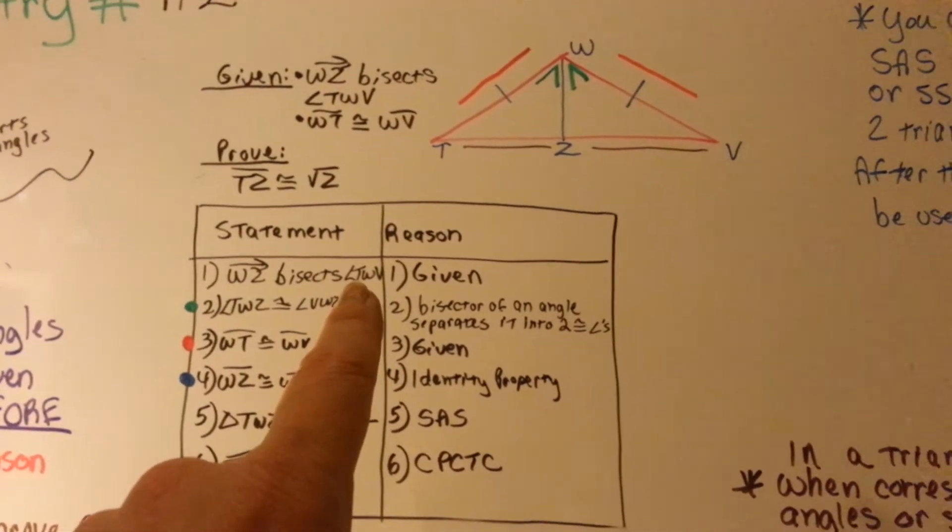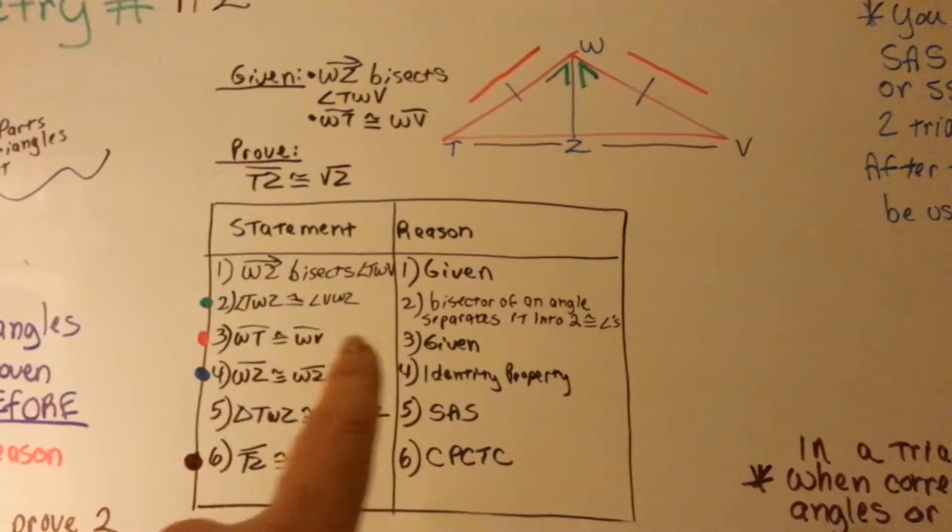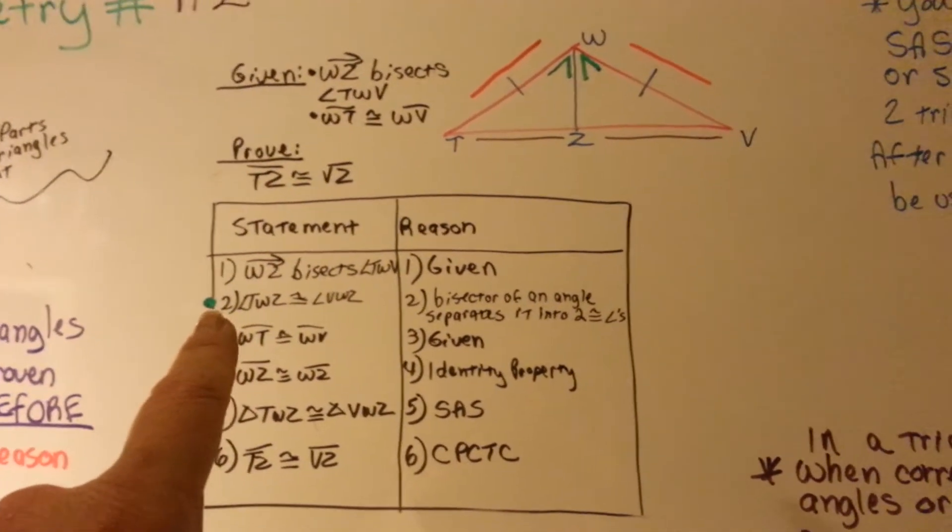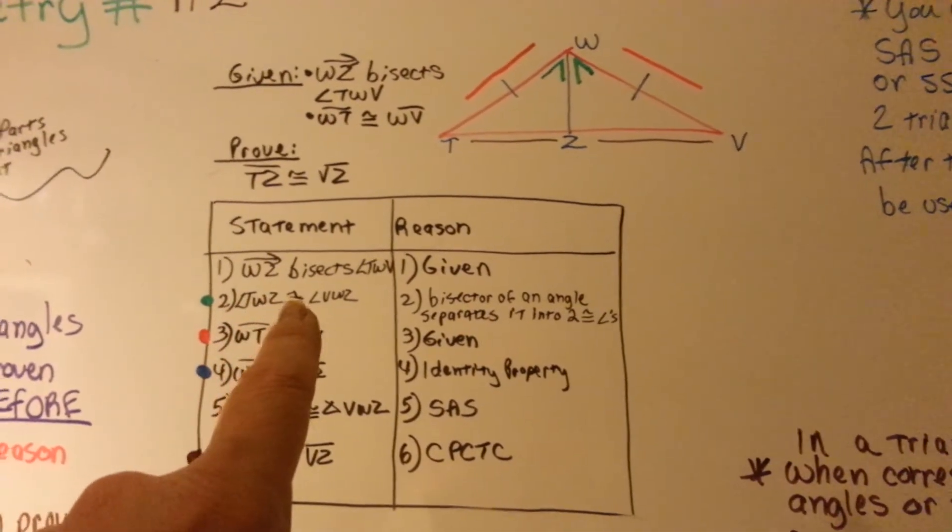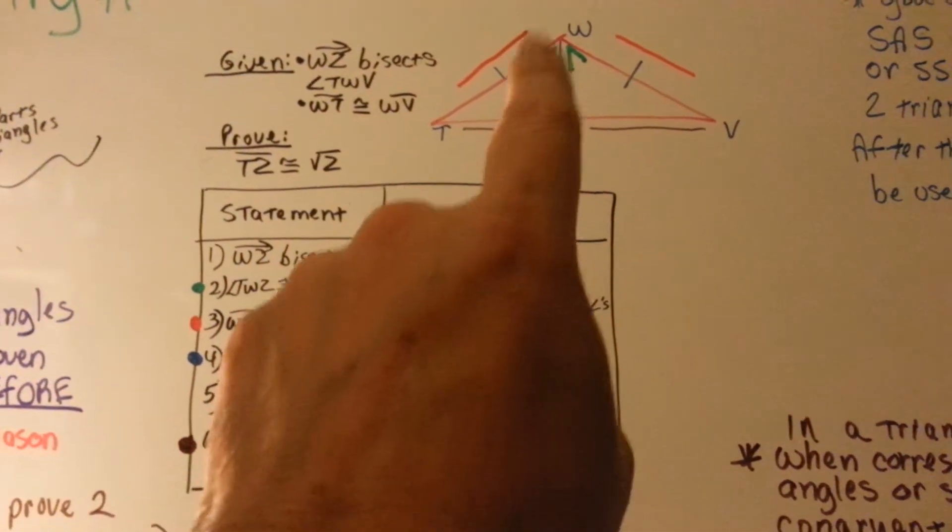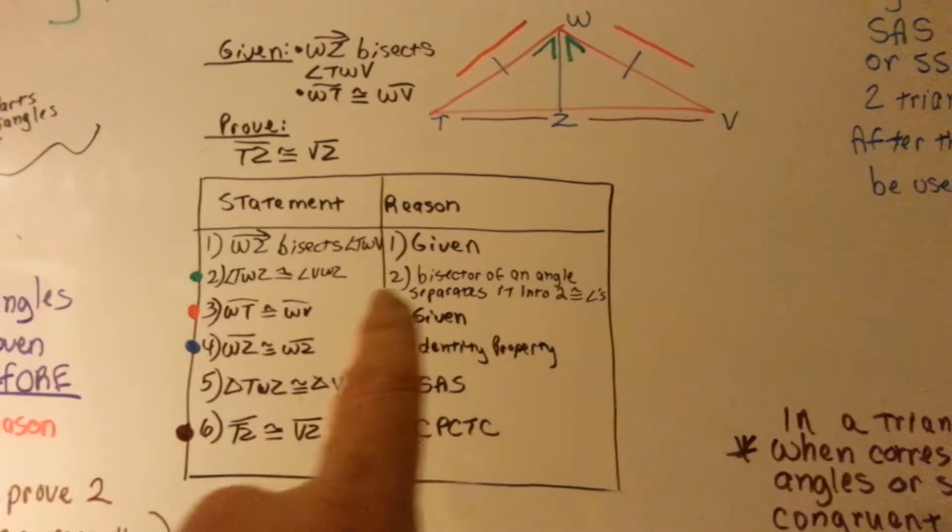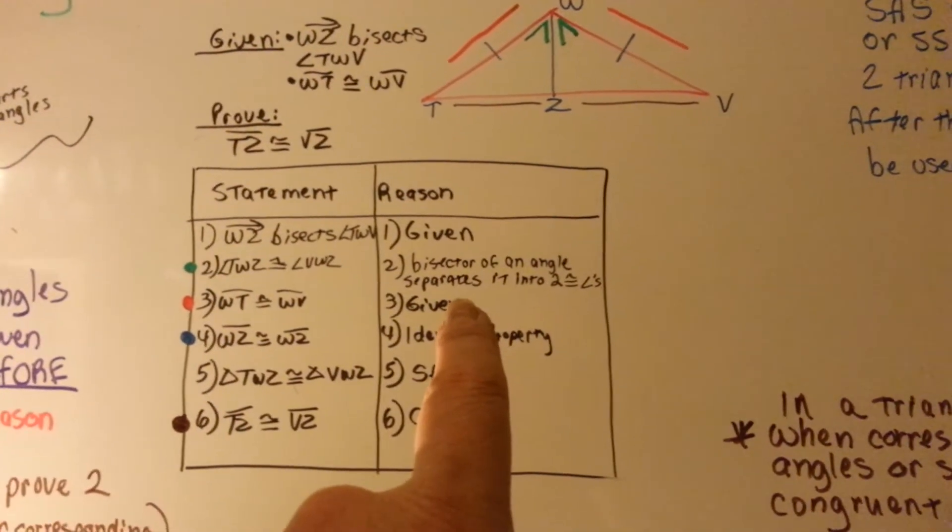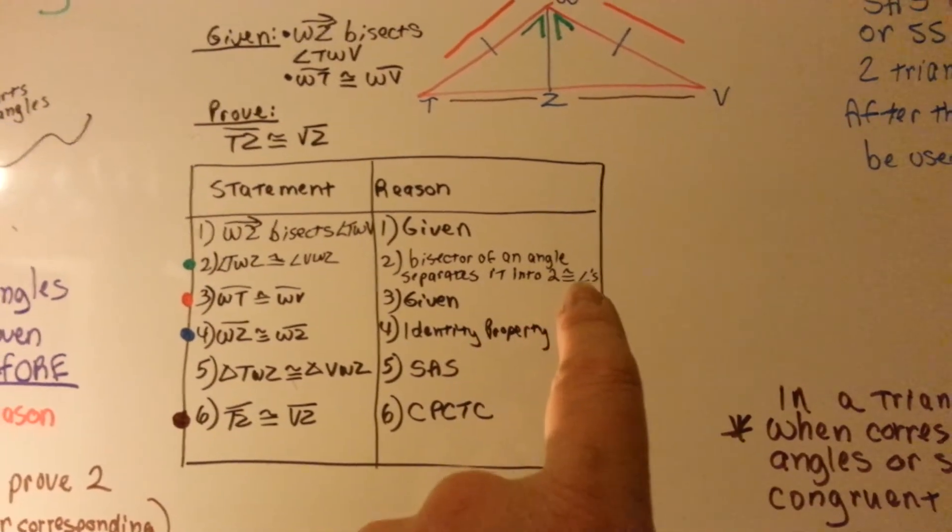WZ bisects TWV. That's given. Now, look at the green. TWZ is congruent to VWZ. This is congruent to that. The reason is the bisector of an angle separates it into two congruent angles.